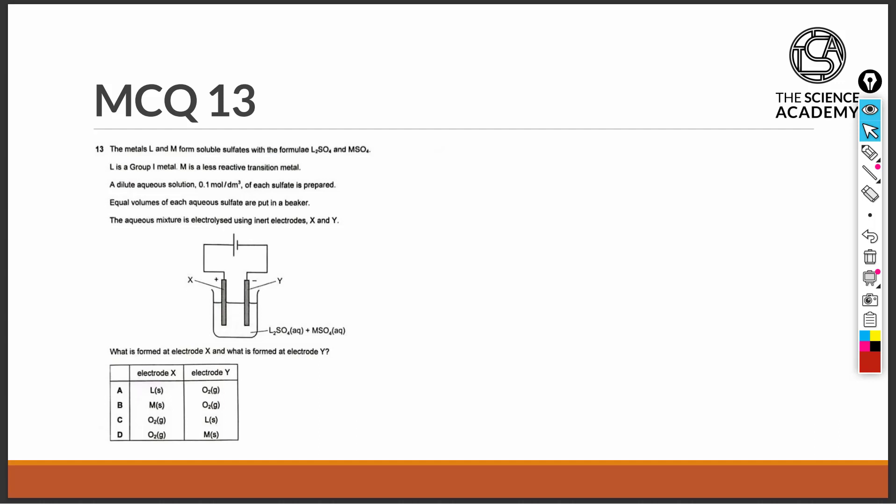Question 13. The metals L and M form soluble sulfates with the formulae L2SO4 and MSO4. From the chemical formula, we can derive the charge of the metal ions.